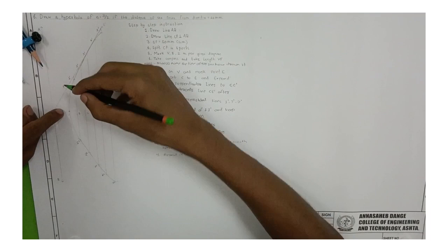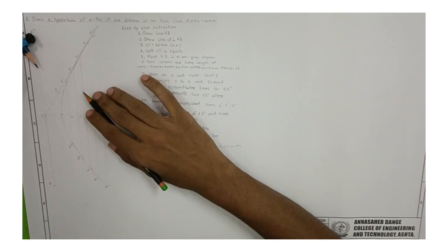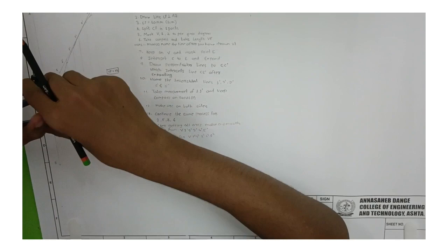After you have done the arc, draw a perpendicular line from V and join it till the arc. After joining the arc, draw an intersecting line CE' and complete the line CE'.